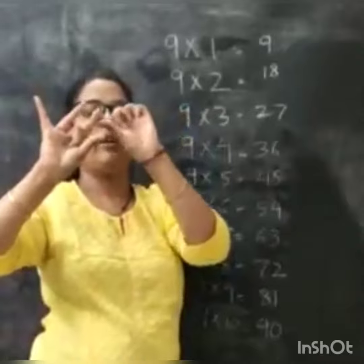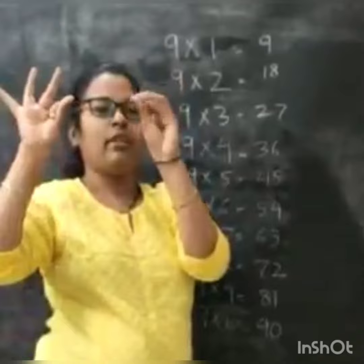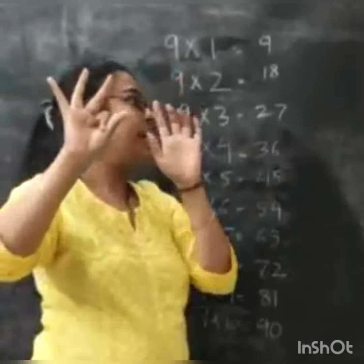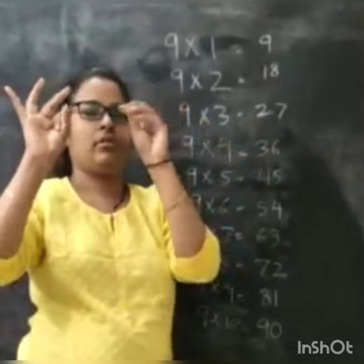Now I will close my fourth finger. So 3 over here and 6 over here. So 9 times 4 is 36.